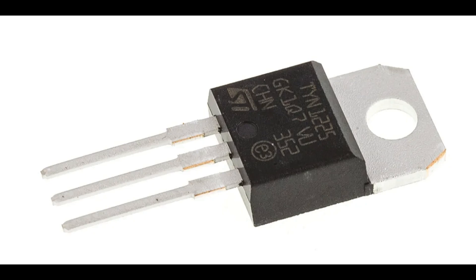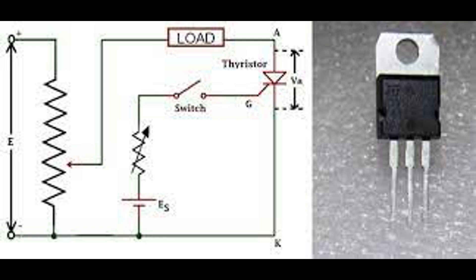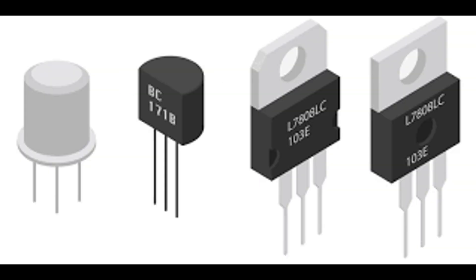Dimmer switches: in residential and commercial lighting systems, thyristors control the phase angle to adjust light intensity smoothly. Power conditioning — power factor correction: thyristors are used in power factor correction circuits to improve the efficiency of power systems by reducing reactive power. Static VAR compensators: thyristors in static VAR compensators help regulate and stabilize voltage in power transmission networks. Telecommunications — battery chargers: thyristors regulate the charging current in battery chargers for telecommunications equipment, ensuring safe and efficient charging. UPS systems: thyristors ensure a continuous power supply by switching to battery power during mains power failures.